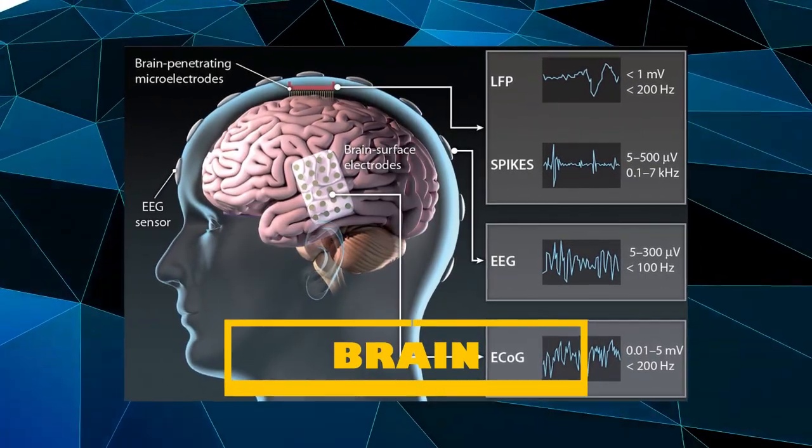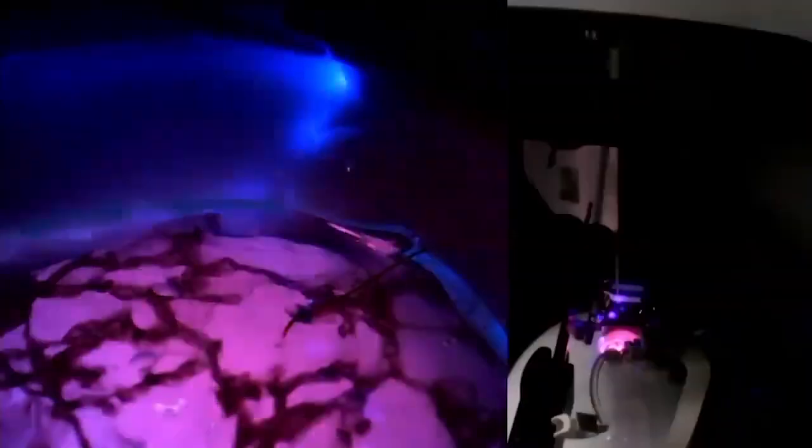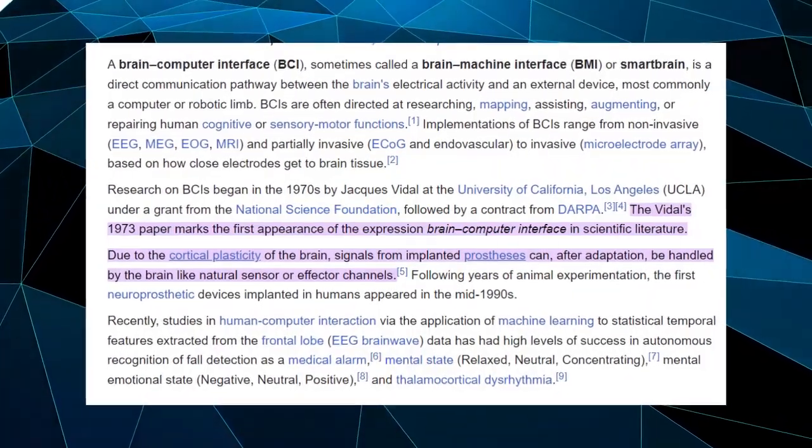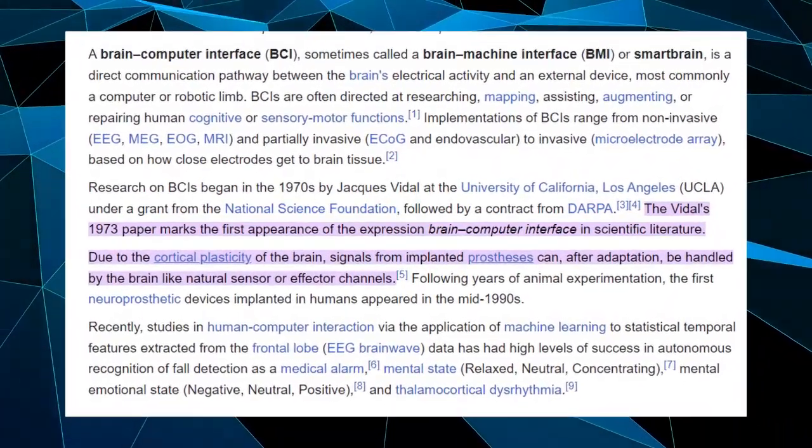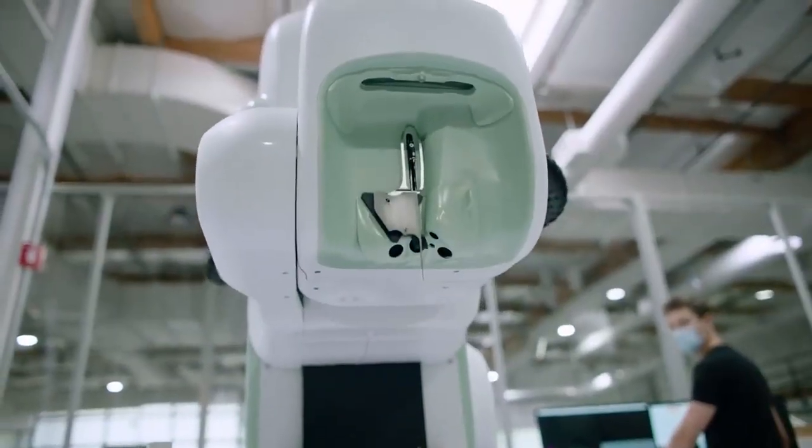A brain-machine interface, or BMI, refers to any device that enables us to control a machine using our brain. BMI is not a new concept. The National Science Foundation awarded a grant to University of California researcher Jacques Vidal in the 1970s to study BMIs. Vidal published a paper in 1973 which was the first appearance of BMIs in science literature.